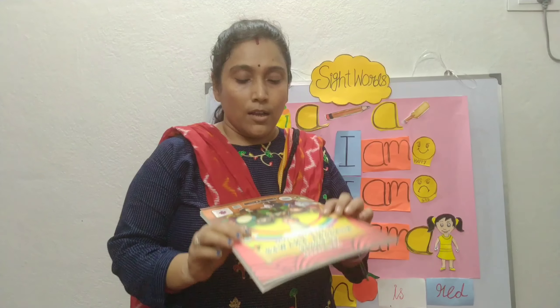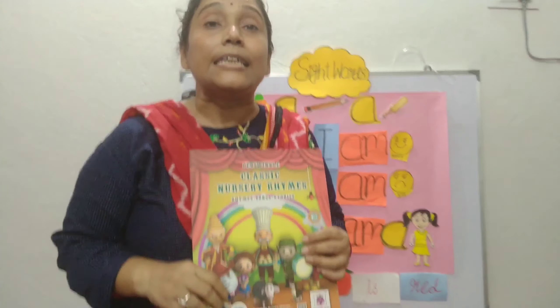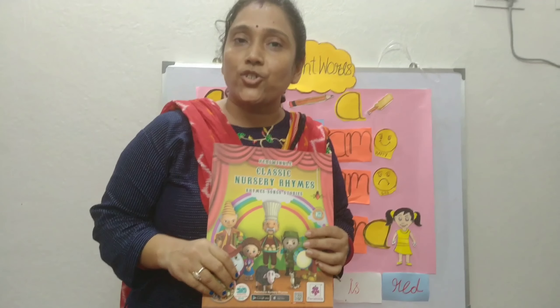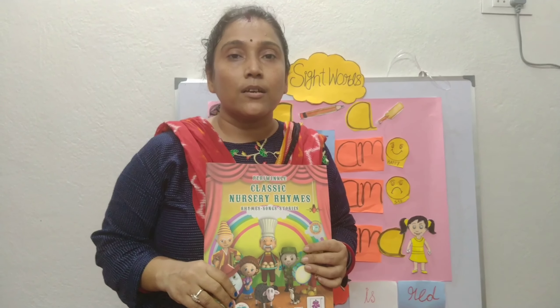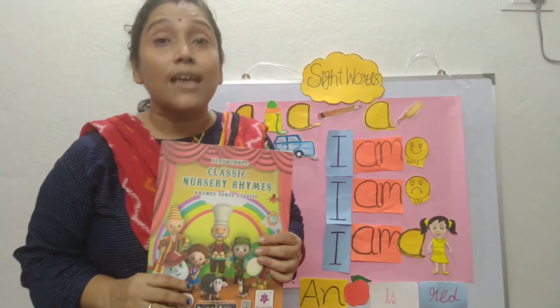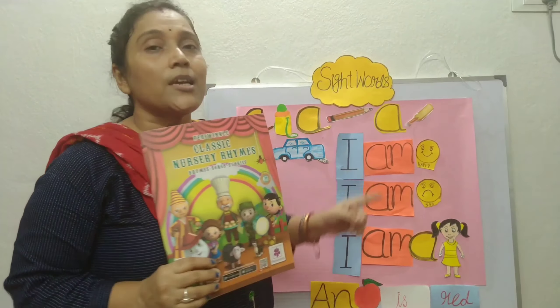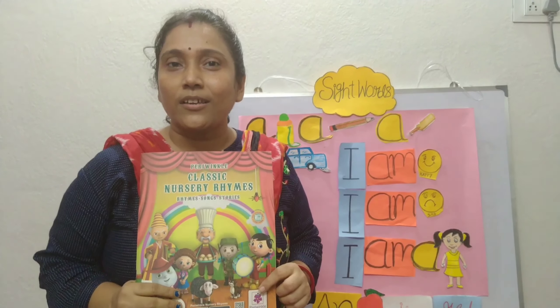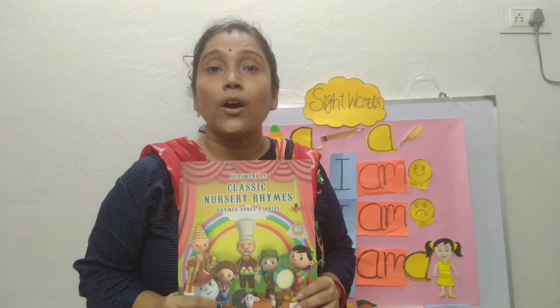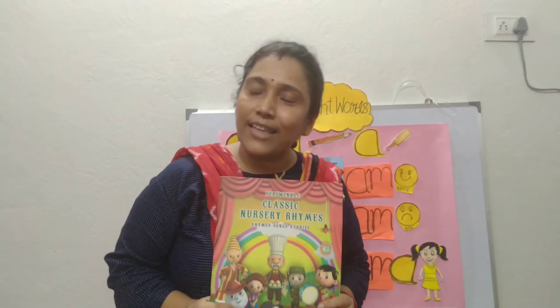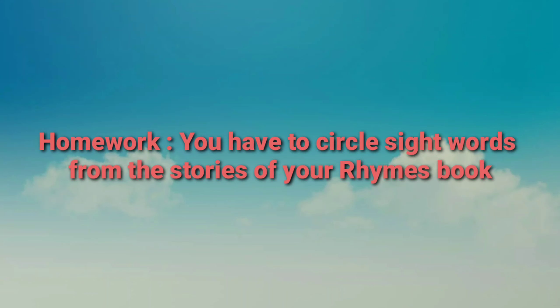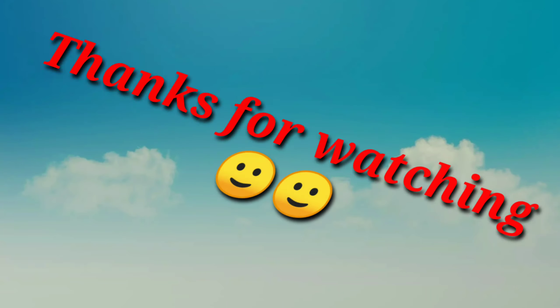I am giving you one task. You all have a rhymes book at home — your rhymes book contains a few stories. You have to circle these sight words from the story. I will come back with new sight words, so stay home, stay safe. Thank you. My mom — my, my.